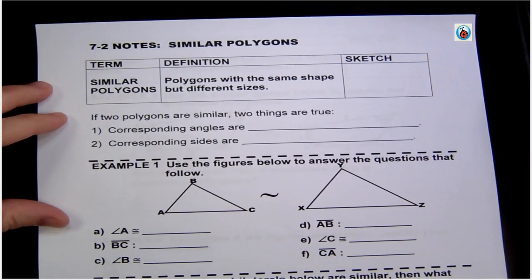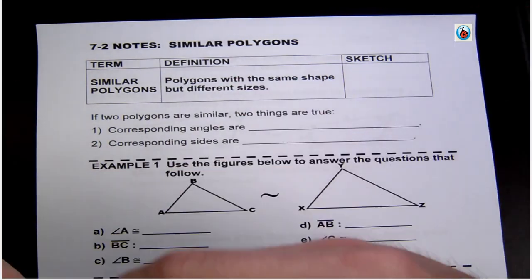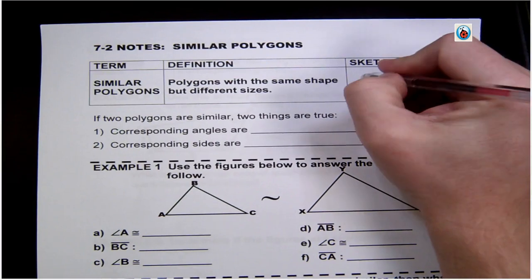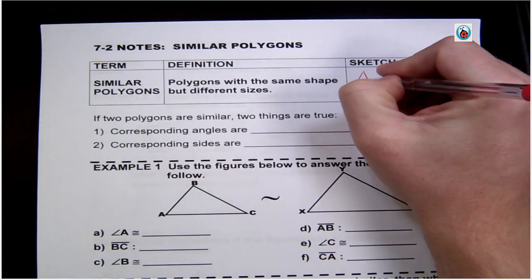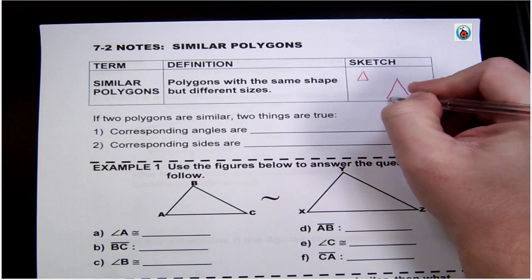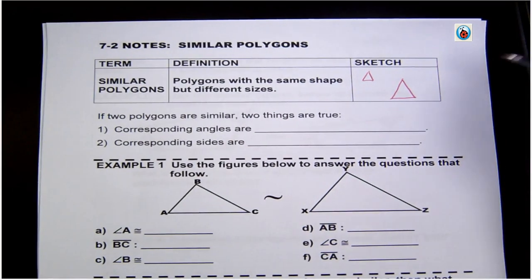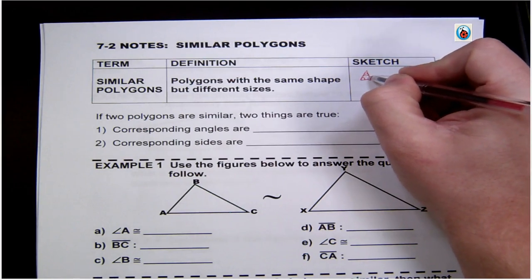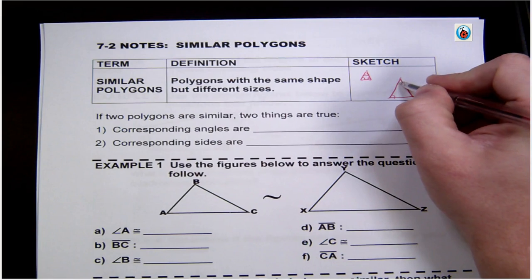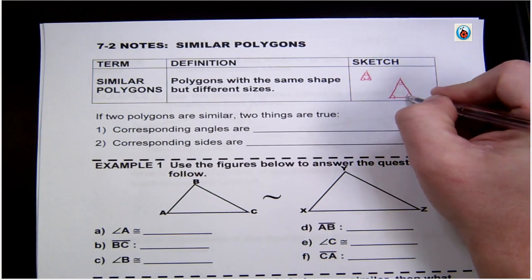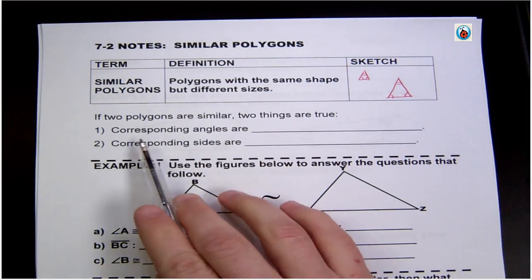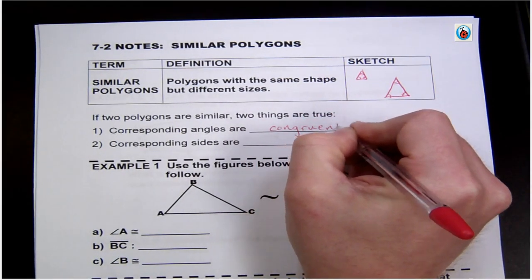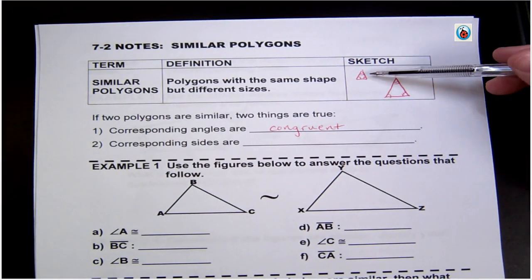Today we're going to talk about similar polygons. These are polygons with the same shape but different sizes. So basically you've got two triangles with the exact same shape, but maybe one is quite a bit bigger than the other. With similar polygons, the corresponding angles are congruent — they'll have the exact same angles as one another.